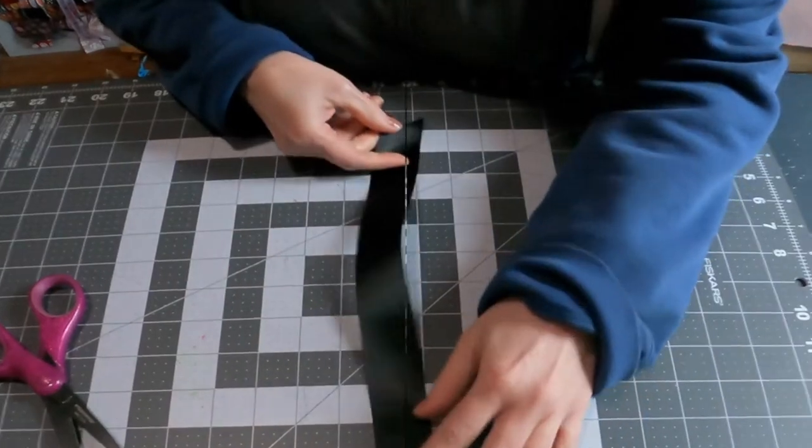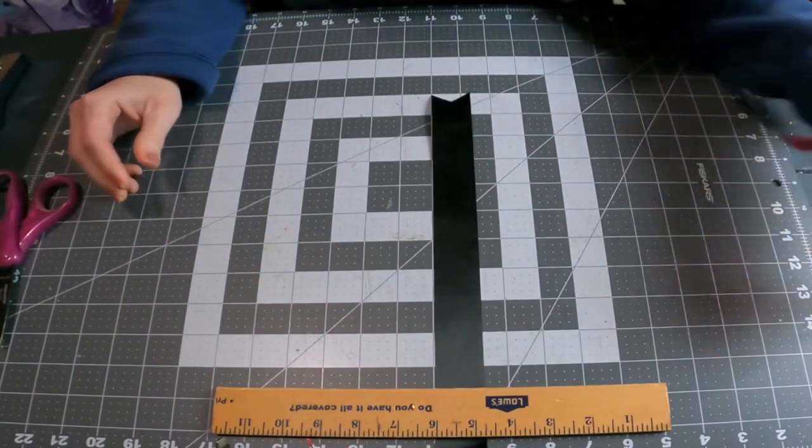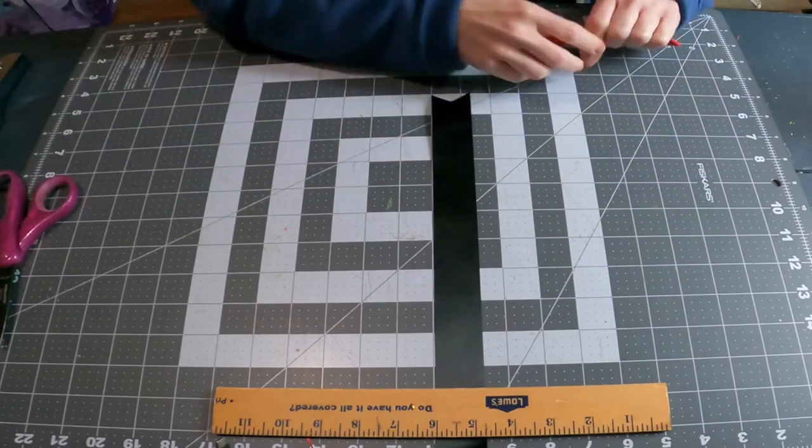I'm going to lay it down. I'm going to put a ruler on top of it because this ribbon was at the end of the roll so it's curly. If you just put a ruler or something on it, it'll flatten it out.